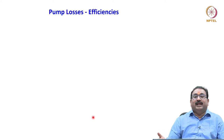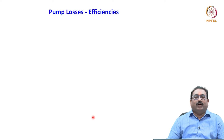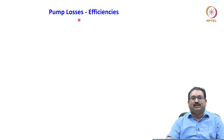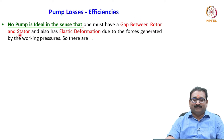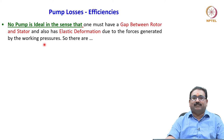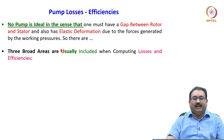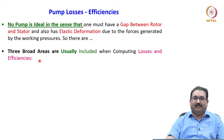This is what you can call the ideal pump. But as I said, there are no ideal pumps in existence — there is always a loss. To understand this, we must know what the pump losses are, that is, efficiency. No pump is ideal in the sense that there must be a gap between the rotor and the stator, and also elastic deformation due to forces from working pressures. There are three broad areas usually included when computing losses and efficiencies.